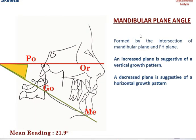Coming to the mandibular plane angle in Downs' analysis: the two planes used are the mandibular plane and the Frankfurt horizontal plane, and their intersection gives the mandibular plane angle. An increased angle is suggestive of a vertical growth pattern — these patients may show open bite. A decreased angle is suggestive of a horizontal growth pattern, and these patients may show a deep bite.